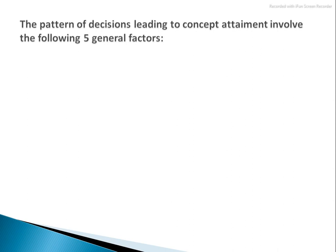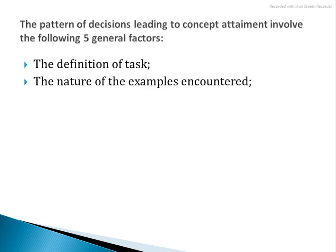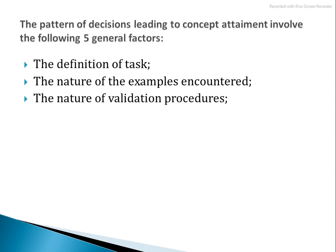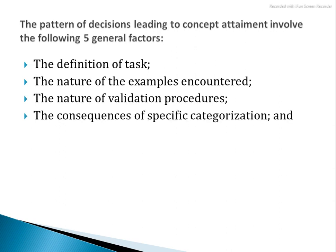Next is the pattern of decisions leading to concept attainment, which involves five general factors: the definition of the task — why are you doing that; the nature of the examples encountered — the concept you have chosen and the conclusion you can give; the nature of validation procedures — validating through a proper procedure; the consequences of specific categorization — what consequence arises from the categories; and the nature of imposed restrictions.